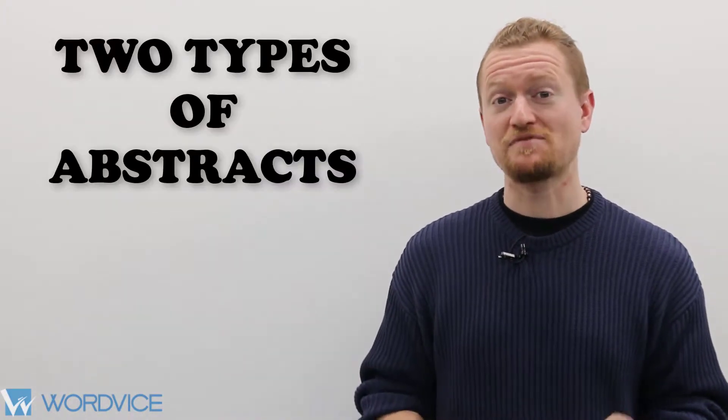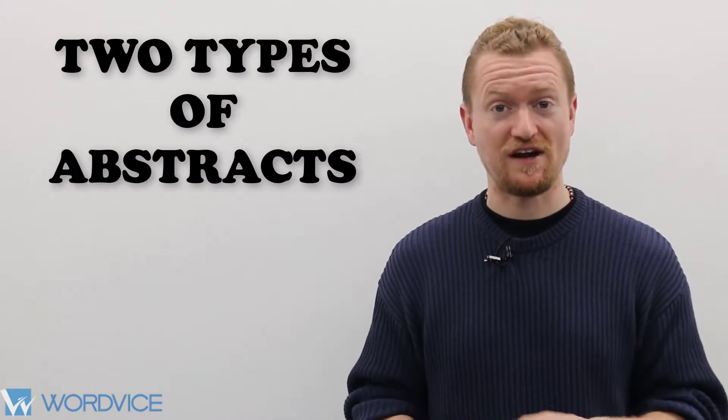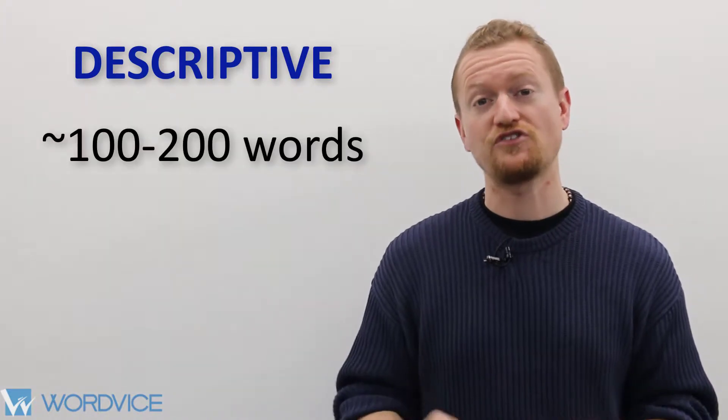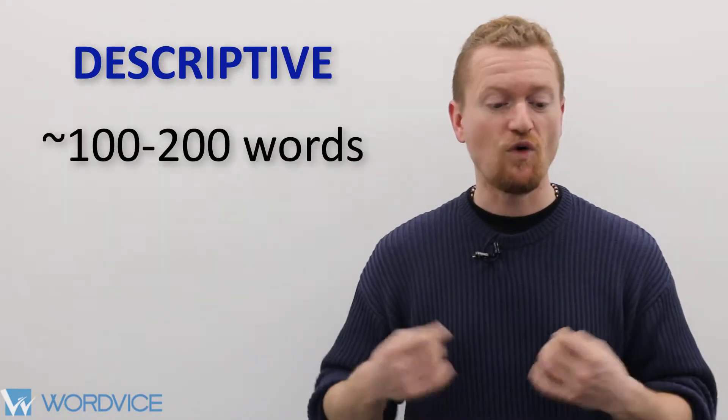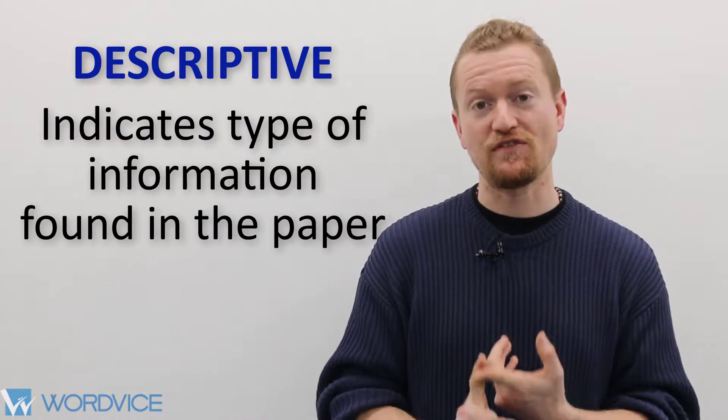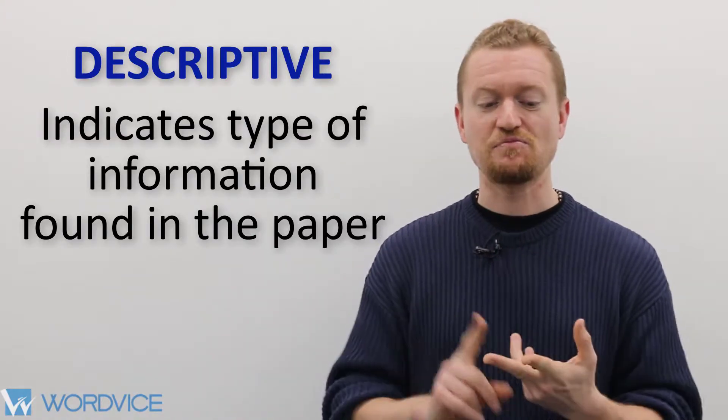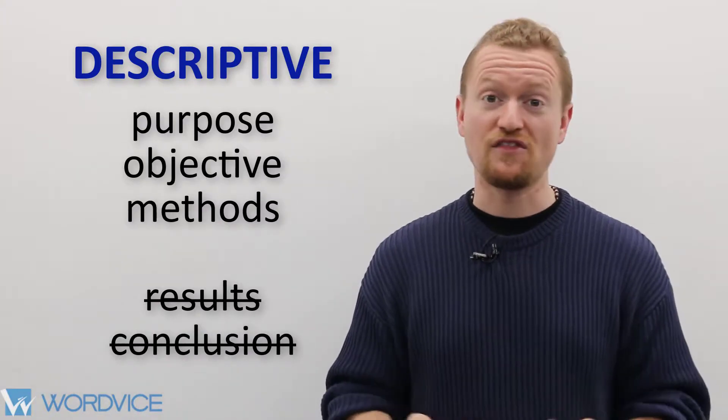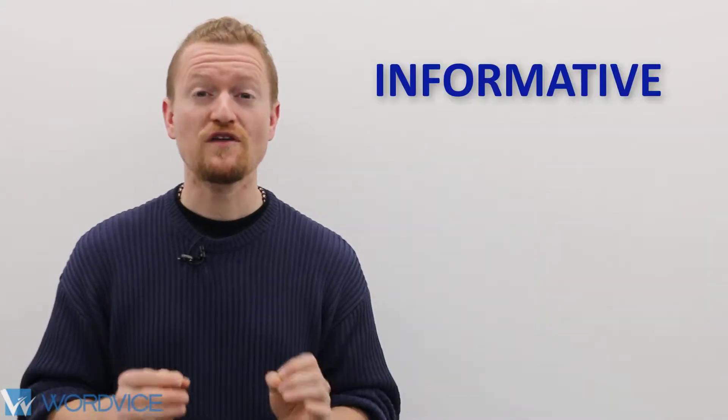There are two main types of abstracts that accompany research writing. The first is the descriptive abstract. The descriptive abstract is around 100 to 200 words in length, and what it does is it indicates the type of information found in the paper. It explains the purpose, objective, and methods of the paper, but not the results or the conclusion.